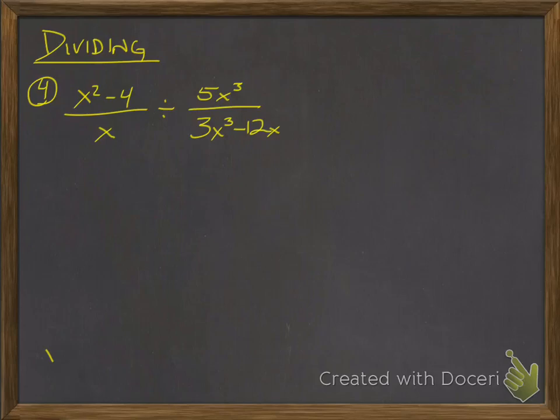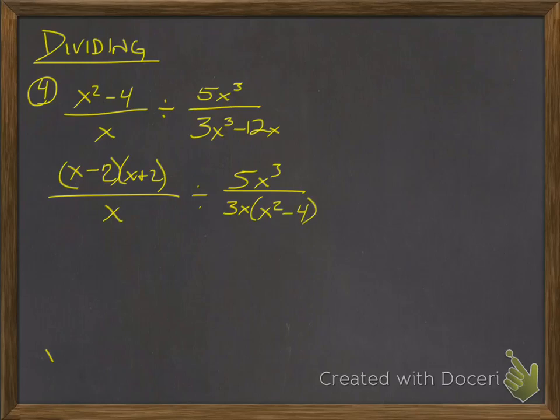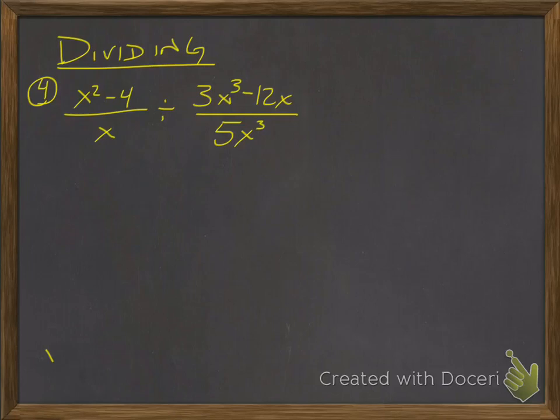Okay, dividing rational expressions is going to be very similar to multiplying. I'm going to first factor everything. So I have x squared minus four becomes x minus two times x plus two over x. And divided by, I can't factor the numerator there. And what I can do is factor out a three x, and I'm left with x squared minus four. And then that can factor. Okay, so I'm bad at editing this. I'm still learning on that part. So go back and I wrote the question down incorrectly. It should have been x squared minus four over x divided by three x cubed minus twelve x divided by five x cubed.